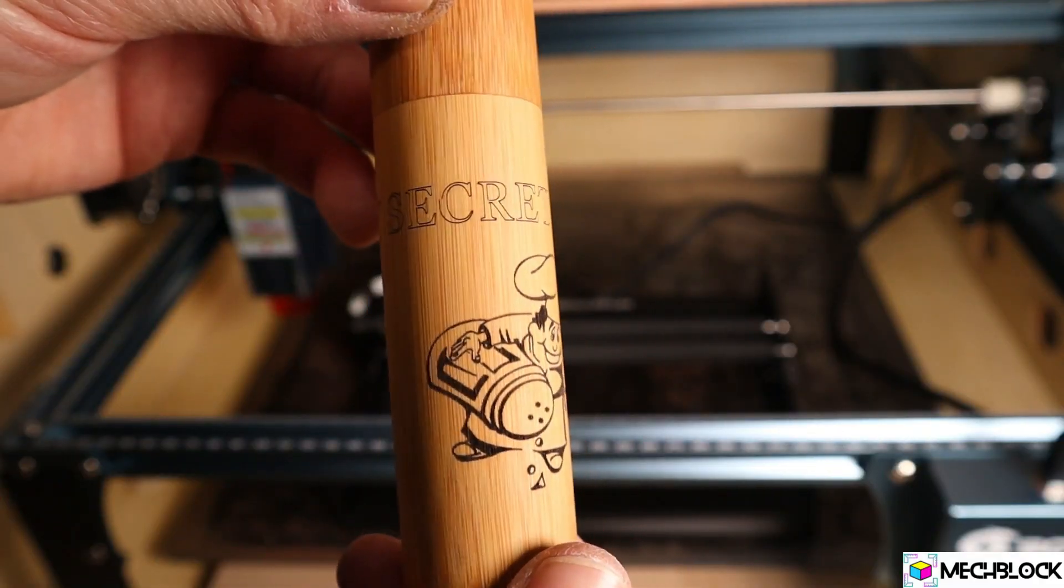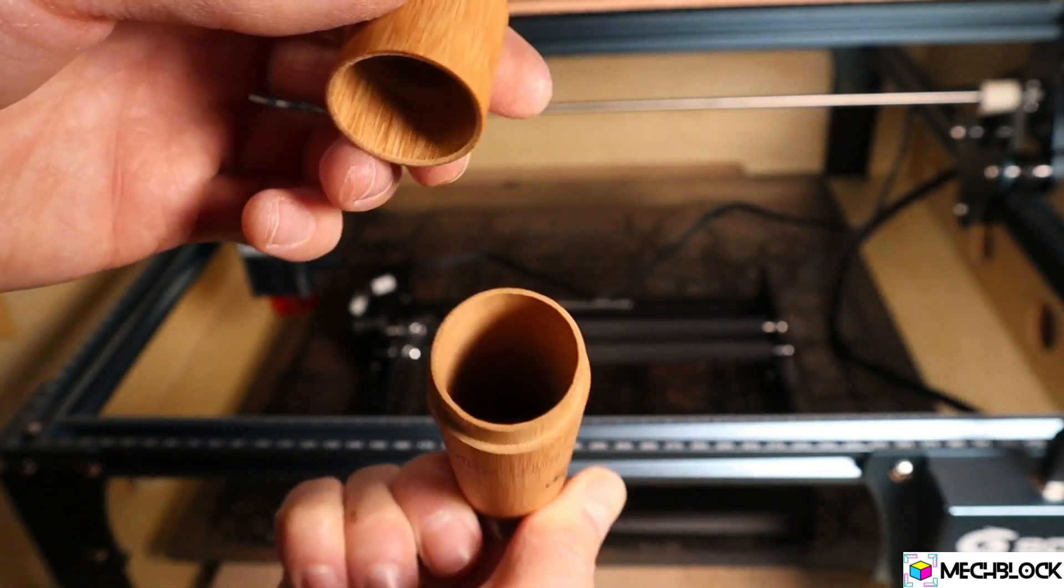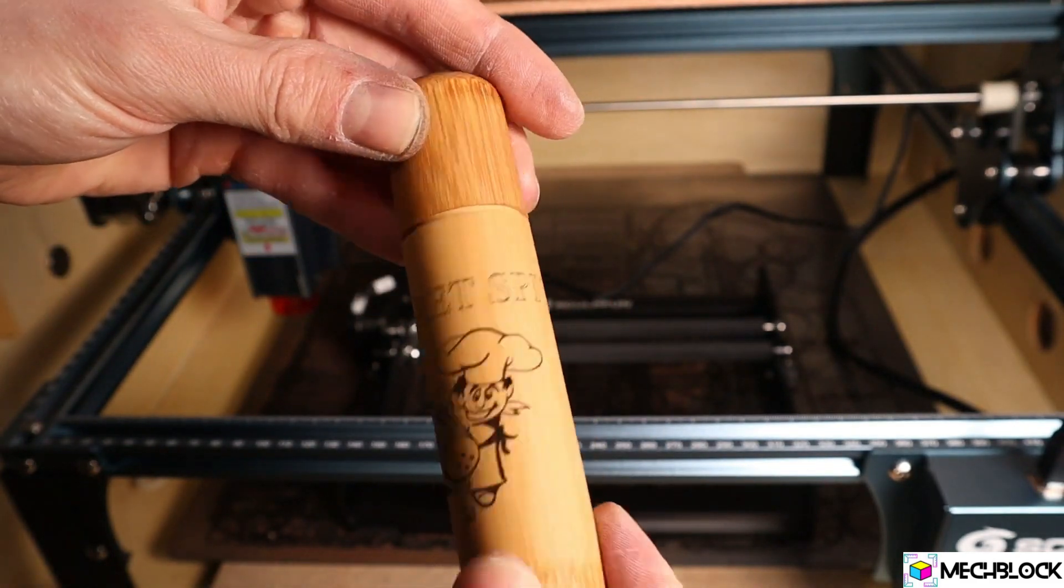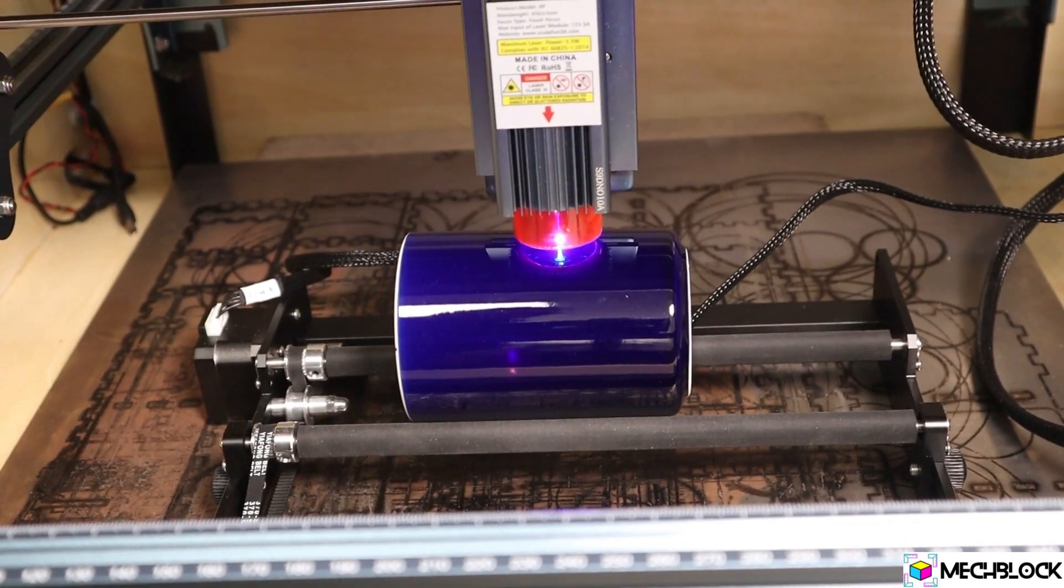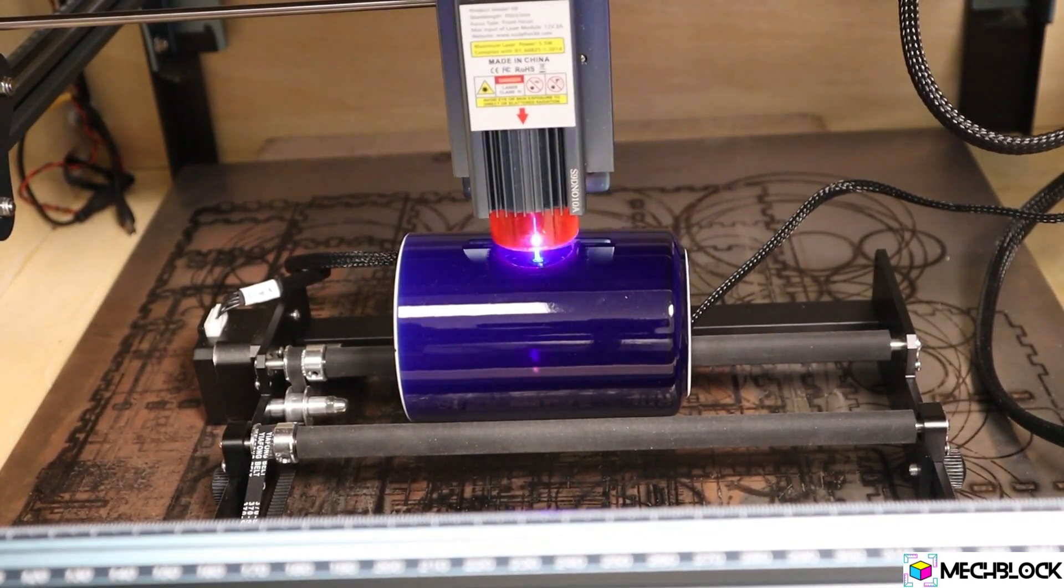Engravings on wood come out very nice. The machine has no problems engraving ceramic cups. Preferably you should engrave stuff by scanning line by line like this ceramic cup.